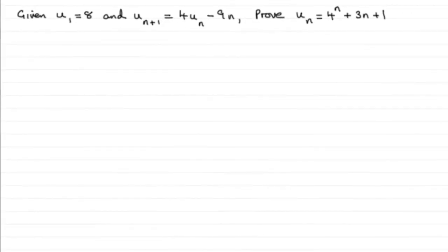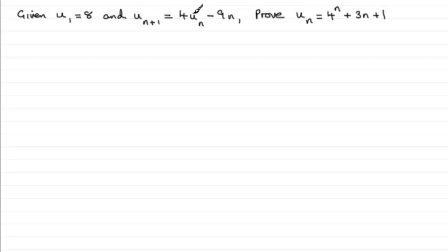Welcome to another tutorial in this series on mathematical induction. In this video, we look at how to prove the nth term from a recurrence relationship. Here's an example: we're given that the first term u1 equals 8, and the recurrence relation u(n+1) = 4u(n) − 9n. We need to prove that the nth term equals 4^n + 3n + 1.